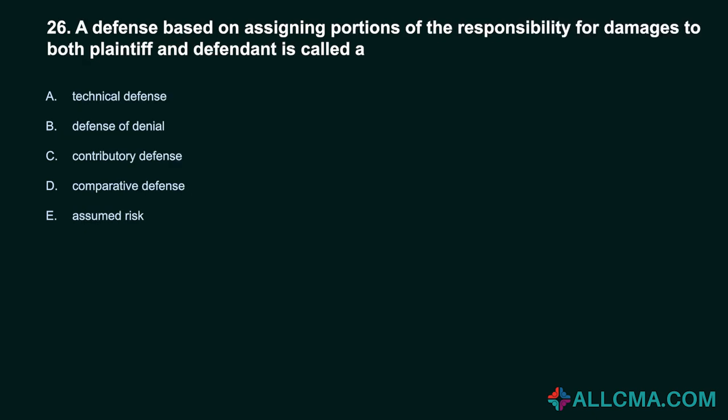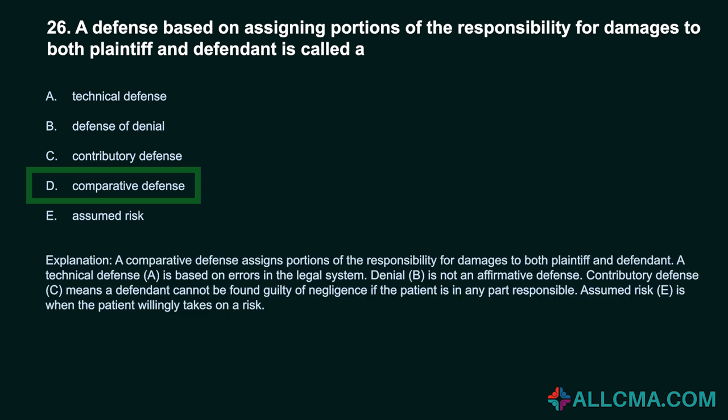Question 26: A defense based on assigning portions of the responsibility for damages to both plaintiff and defendant is called: a) technical defense, b) defense of denial, c) contributory defense, d) comparative defense, e) assumed risk. Correct answer: D, comparative defense. A comparative defense assigns portions of the responsibility to both plaintiff and defendant. A technical defense is based on errors in the legal system. Denial is not an affirmative defense. Contributory defense means a defendant cannot be found guilty if the patient is in any part responsible. Assumed risk is when the patient willingly takes on a risk.